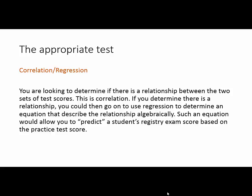The appropriate test is a correlation regression test. You're looking to see if there's a relationship between two sets of test scores. That's called correlation - looking for a linear relationship between them. If you determine there is a relationship, then you can move on and do what's called regression. That will give you an equation of a line that describes that relationship algebraically. You could then use that equation to make predictions. Once you had a student's practice test score, you could predict what the registry exam score would be. Of course, it won't always be right, but it would give you a pretty good prediction, assuming there was a correlation.